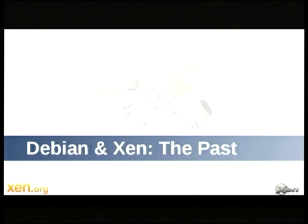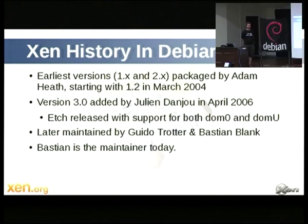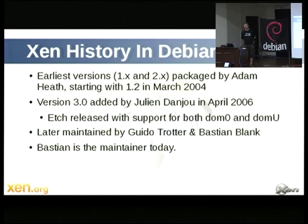Xen arrived in Debian pretty early in its life. Adam Heath packaged it — the earliest found in the changelog was version 1.2 in March 2004, not long after the 1.0 release. Really it was when version 3 was uploaded by Julien Danjou in 2006 that Etch became the first release to really contain Xen support, both DOM0 and DOMU. Guido and Bastian have been maintainers since then, and mainly it's Bastian these days.